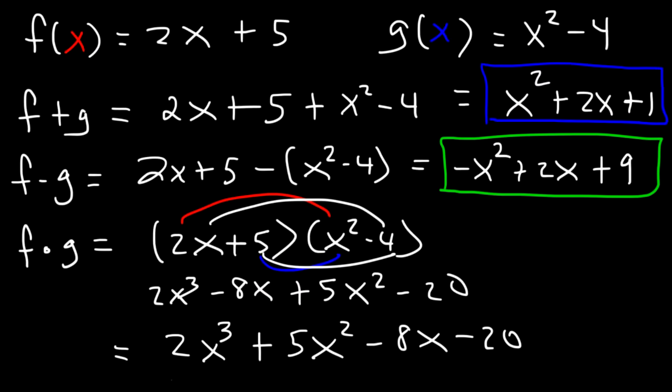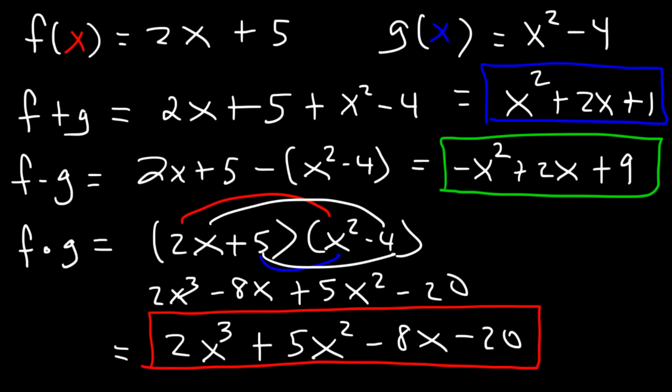Now what is the domain of the three functions that we found? Let's start with f plus g. Whenever you have a polynomial, be it a binomial, trinomial, or many terms where you don't have any fractions, no radicals, or logarithmic functions, the domain will be all real numbers. There's no restrictions on the value of x in this expression. x could be anything. So for these three functions f plus g, f minus g, and f times g, we don't have any fractions or radicals. So the domain is all real numbers, negative infinity to infinity.